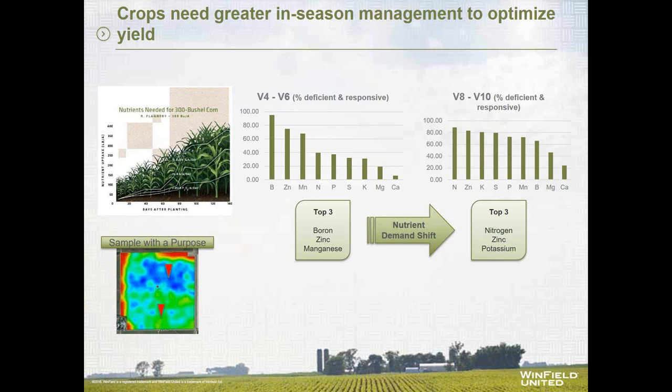I would venture to say that many of those components of the high yields are in part due to better plant nutrition. Crops need greater in-season management to optimize yield and to achieve those higher yields. Specifically, some of the aspects we're going to consider this morning are the nutrient requirements and the uptake patterns for high-yielding corn, sampling methods, tissue sampling specifically, and then how tissue sample results differ across crops, growth stages, and different growing seasons as a function of different environments.